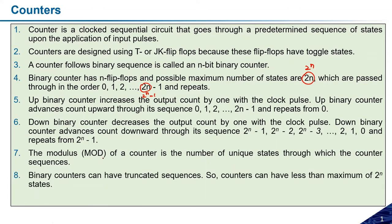Modulus is an important terminology in the counter. Modulus decides how many states the counter has. For a mod-3 counter, it starts from 0, goes to 1, then to 2 — three different states — and then comes back to 0. The operation is: 0 to 1, 1 to 2, 2 to 0, and so on. We call this a modulus-3 counter.